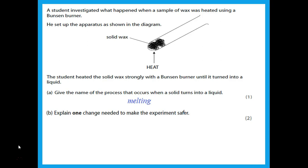Explain one change needed to make the experiment safer. We are heating a solid in a test tube directly, which means the solid is likely to splash or pop out. To make it safer, we should not heat it directly but use a hot water bath — placing the test tube in a beaker of water that is heated, not the test tube directly. This prevents the wax from boiling over.